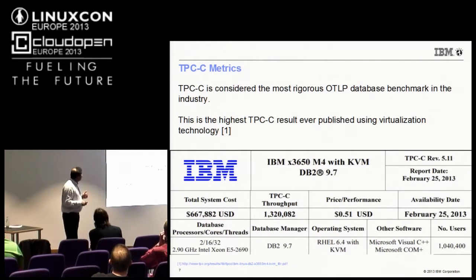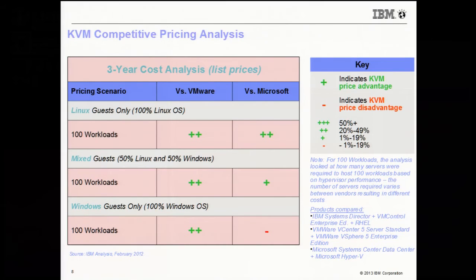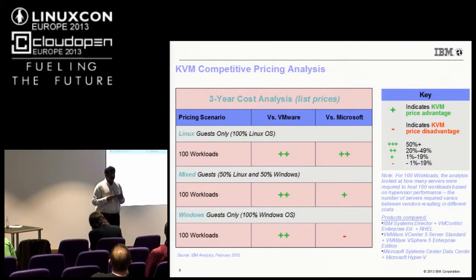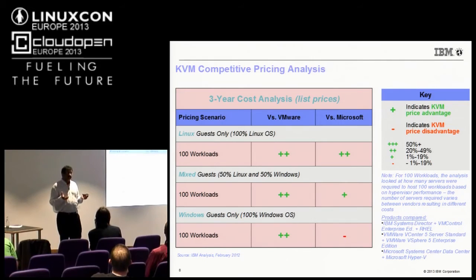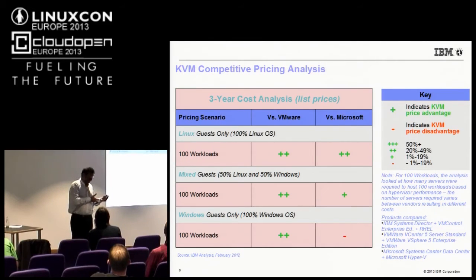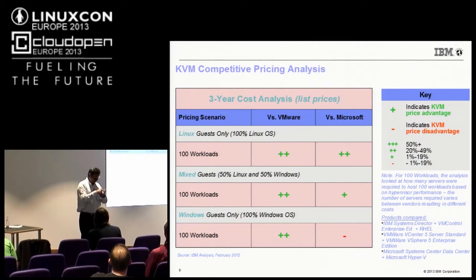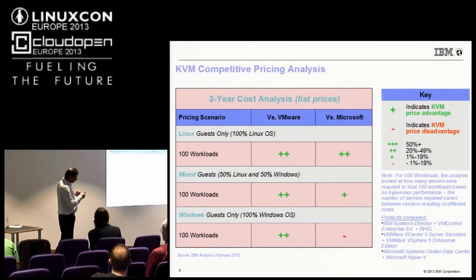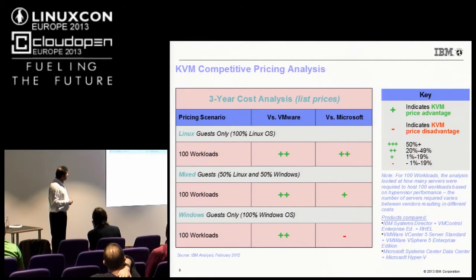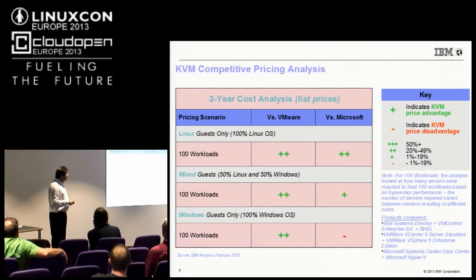A third argument why many customers use KVM is to save costs — typically either saving costs versus VMware or saving costs versus Hyper-V. The three-year cost analysis was based on purchasing normal software licenses — whether RHEL or management software — plus three-year support, and then comparing total costs. With 100 virtual machines and 100% Linux workload, savings versus VMware were anywhere between 20 and 50 percent.